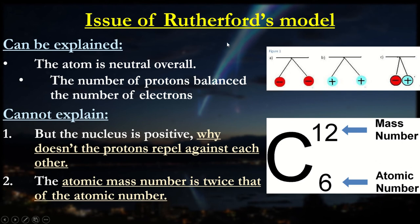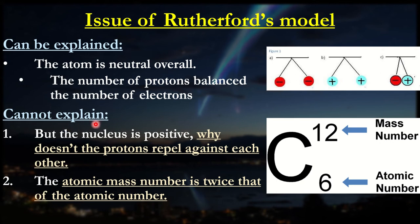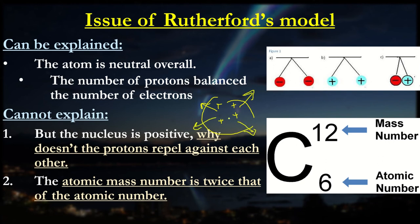Let's look at some things about Rutherford's model — some good points and bad points. We know that the atom is neutral overall, and that's well explained by his model: the number of negative charges of all electrons equals the number of positive charges. What his model couldn't explain is, if the nucleus is indeed positive, why aren't the protons repelling each other? If you have a group of positive charges stuck really close together, according to electrostatic forces they should be repelling away. They didn't know.